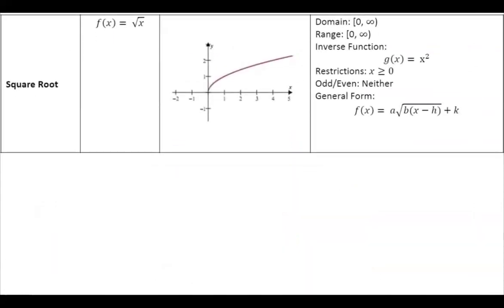The next function is the square root function. Looking at the reflection of the graph on the x-axis, the domain starts from 0 and goes to positive infinity. For the range, it is again 0 to positive infinity — the square root can take on only 0 and positive values. Since it's a one-to-one function, its inverse function is x squared. The general form is a times the square root of b(x minus h) plus k.